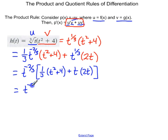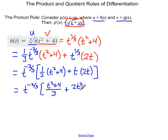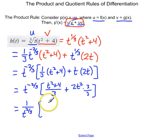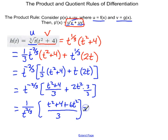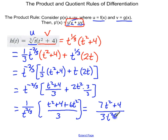So I've got t to the negative 2 thirds times t squared plus 4 over 3 plus 2t squared. Let's multiply that by 3 over 3 to get a common denominator, and I'm going to have 1 over t to the 2 thirds times t squared plus 4 plus 6t squared, all over 3. My final answer is 7t squared plus 4 all over 3t to the 2 thirds.